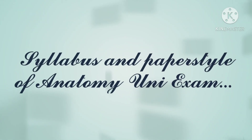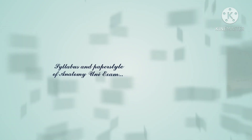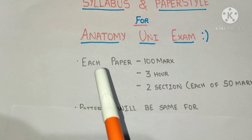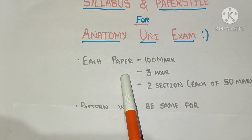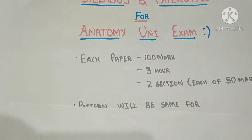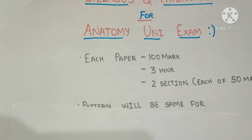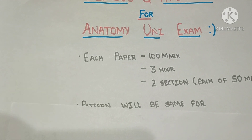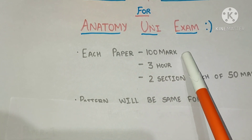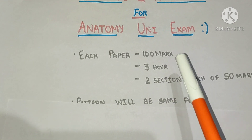Hello friends. In this video we are going to discuss the syllabus and paper style for the anatomy exam in Saurashtra University. So let's begin. There will be two papers in anatomy — in the first paper there will be half the portion, and in the next paper there will be the other half portion. Each paper will be of 100 marks and the duration will be three hours.